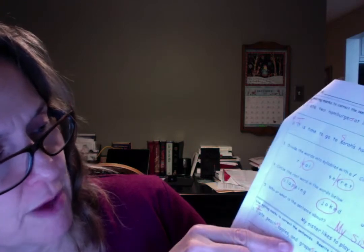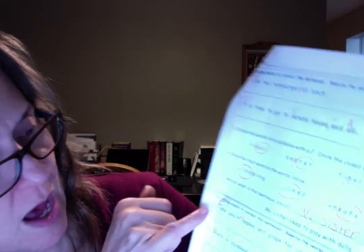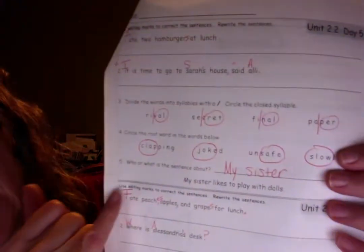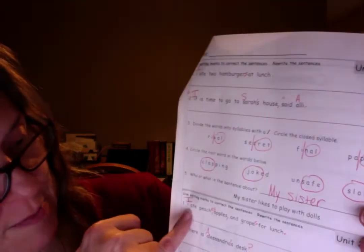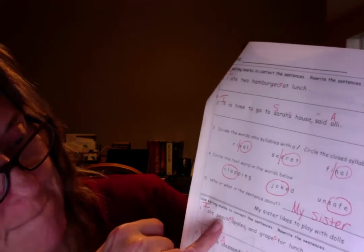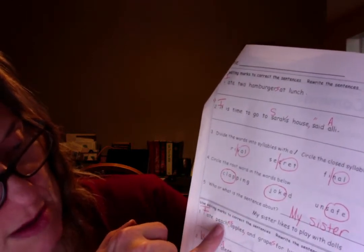Review. I ate peach, apples, and grape for lunch. I should have been capitalized. Again, it's the first word. It's also the pronoun I which always gets capitalized no matter where it's at. Peach should become peaches with an E-S.